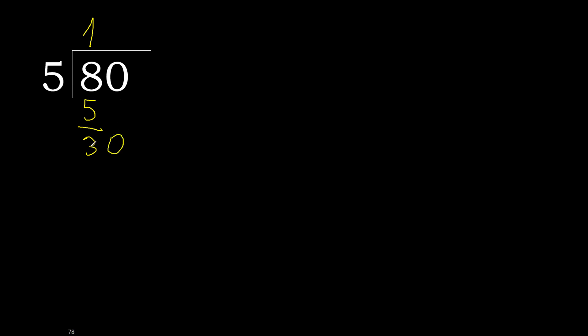Bring down the 0, making 30. 5 multiplied by 6 is exactly 30. That is not greater — perfect. 30 minus 30 is 0.